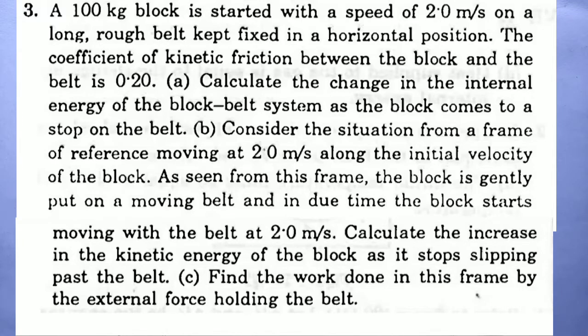Second, consider the situation from the frame of reference moving at 2 m/s along the initial velocity of the block. As seen from this frame, the block is gently put on a moving belt, and in due time the block starts moving with a speed of 2 m/s. Calculate the increase in the kinetic energy of the block as it stops slipping past the belt. Third, find the work done in this frame by the external force holding the belt.